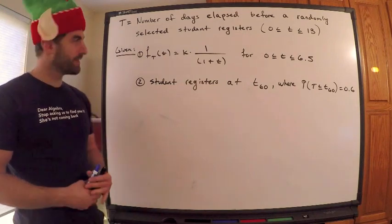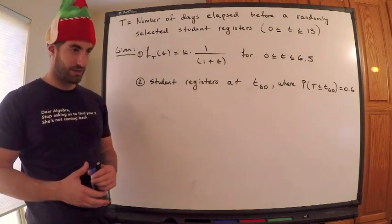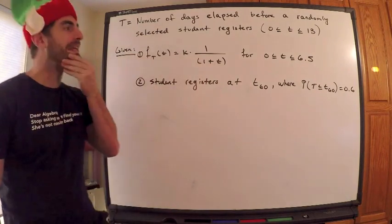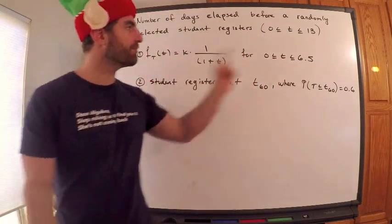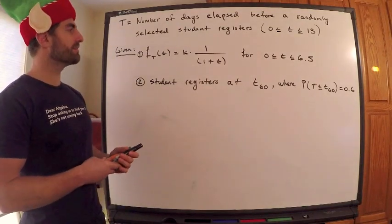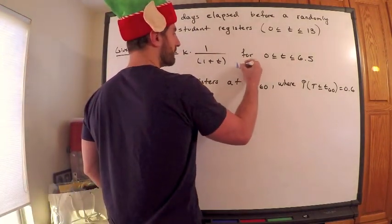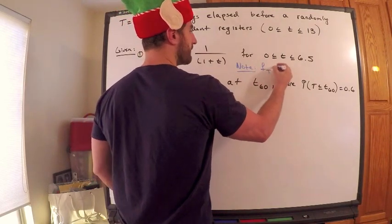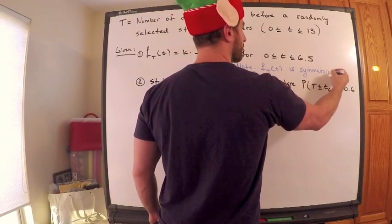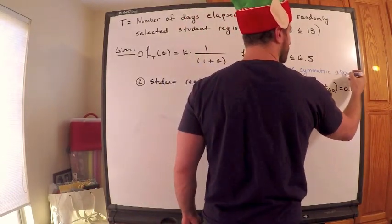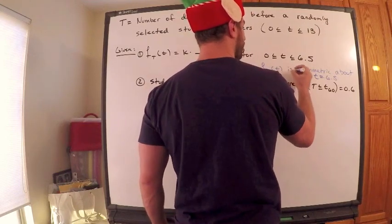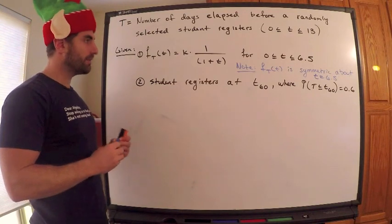And some other information we're given is that the density function of t is given. Well, it's proportional to this rational expression, 1 over 1 plus t, only though, only for 0 less than or equal to t, less than or equal to 6.5. Now 6.5 of course is half of 13, so that's definitely going to come into play. And also actually it says f of t is symmetric, actually we need that as well. Also note, f of t is symmetric about t equals 6.5. We absolutely need that as well, can't answer this question without that.